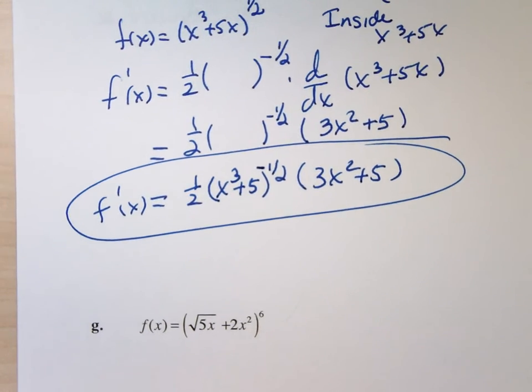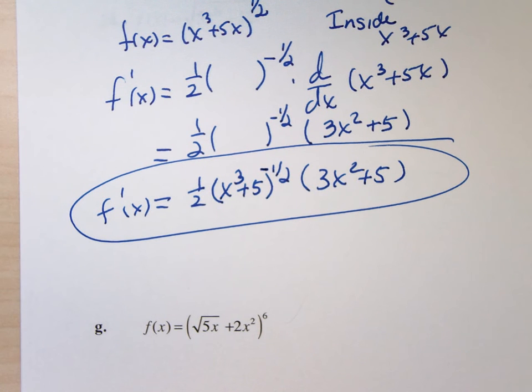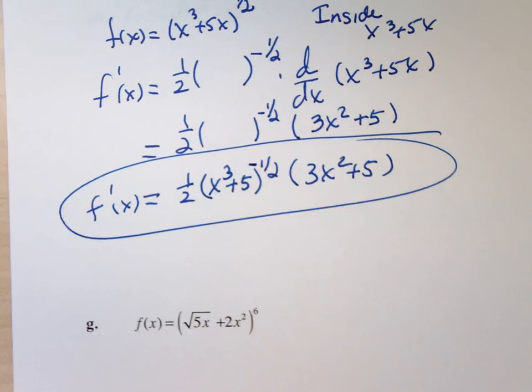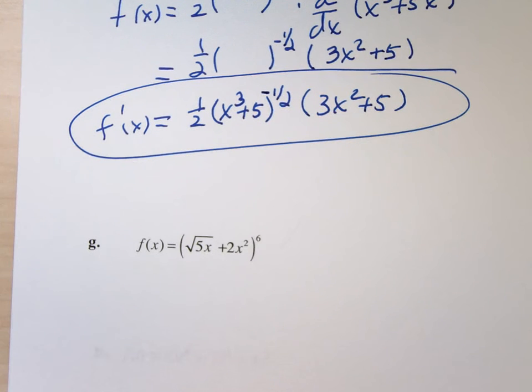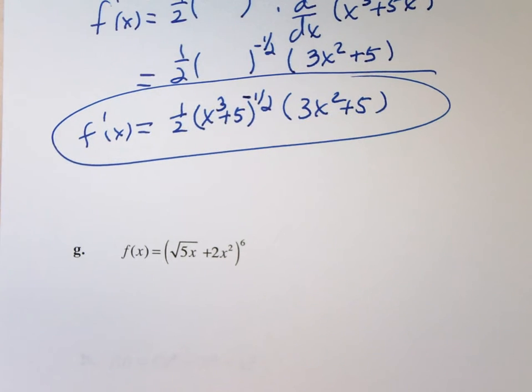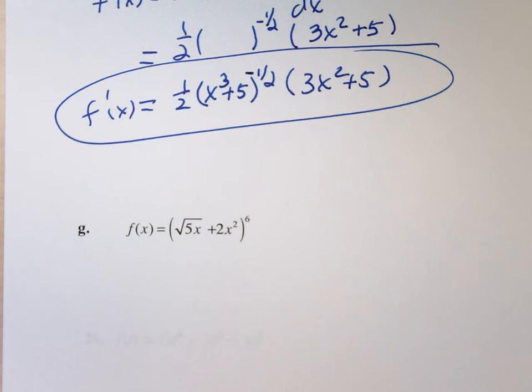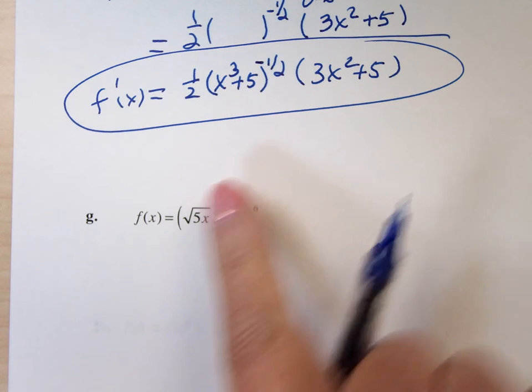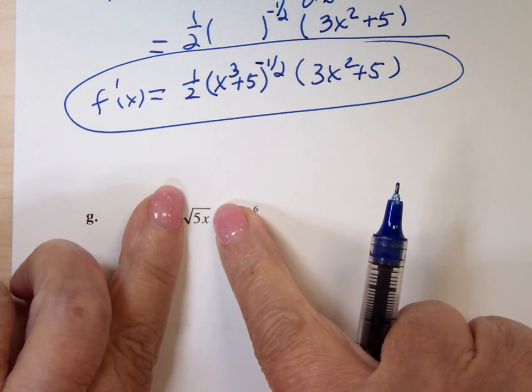Sometimes, blobs have blobettes. I have among my collection of bears, a mama bear who's holding a baby bear who's holding a bear of its own. So it's a big bear, little bear, little little bear. And that's what this guy has, he has a blobette, and the blobette is the square root of 5X.